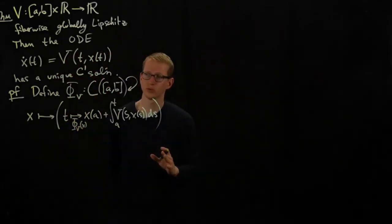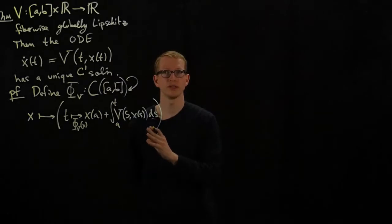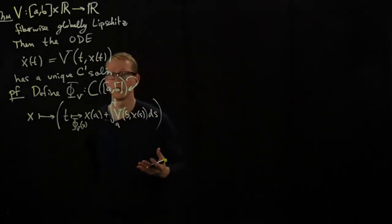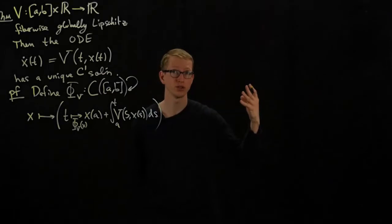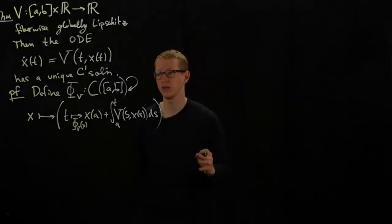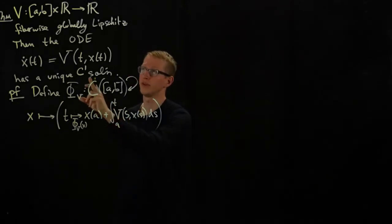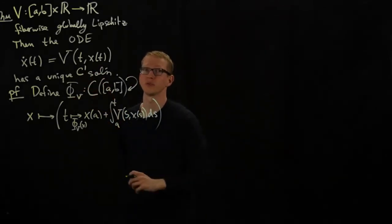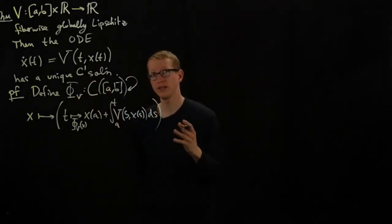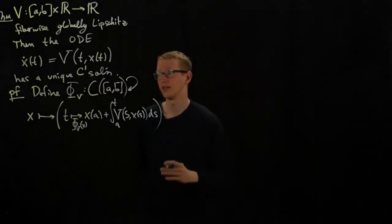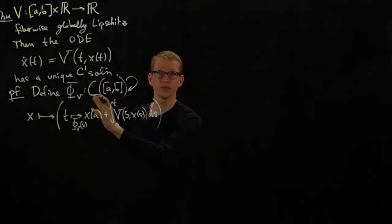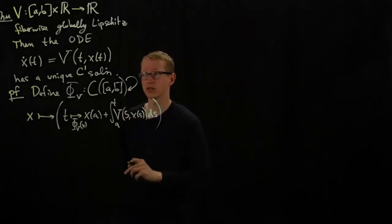So what we're going to do is we're going to make a couple of observations about this function. We've already looked at what happens to it when we iterate it twice in a particular example. But what we'll now do is we'll use that observation and the fact that this is fiber-wise, globally, Lipschitz, to actually find an appropriate bound on the distance between the application of this function to two different functions.